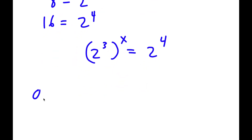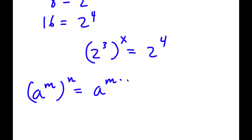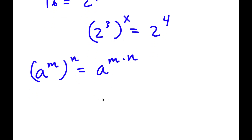Now if I have something in the form a to the power of m to the power of n, this is equal to a to the power of m times n. So 2 to the power of 3 to the power of x equals 2 to the power of 3x, and this is equal to 2 to the power of 4.